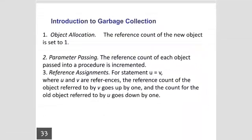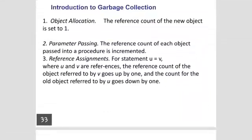On parameter passing, the reference count of each object passed into a procedure is incremented. On reference assignment — for a statement u = v where u and v are references — the reference count of the object referred to by v goes up by 1, and the count for the object referred to by u goes down by 1.